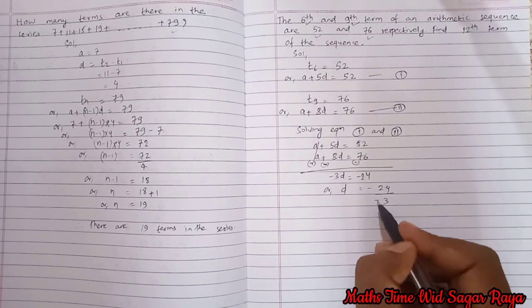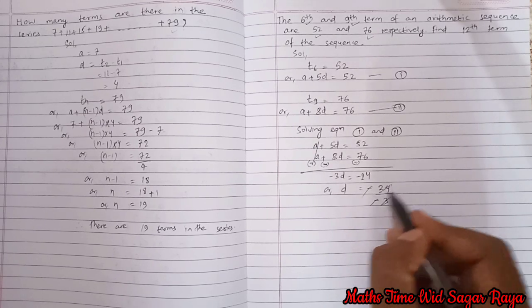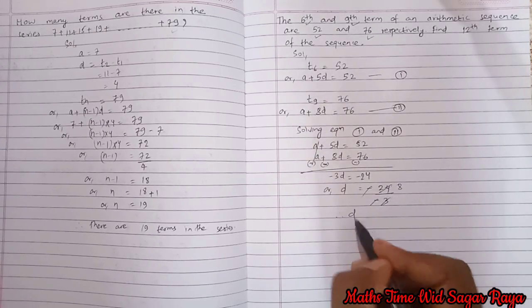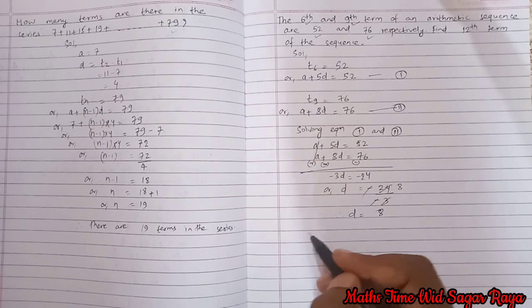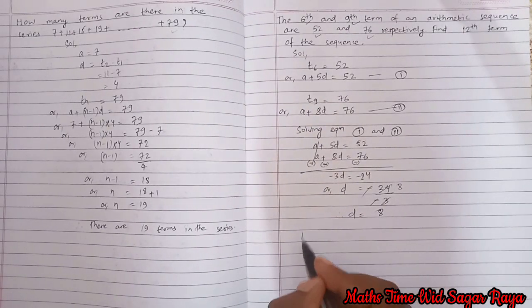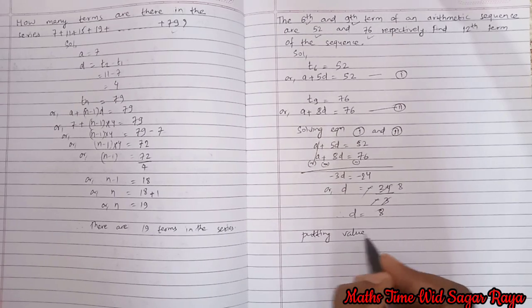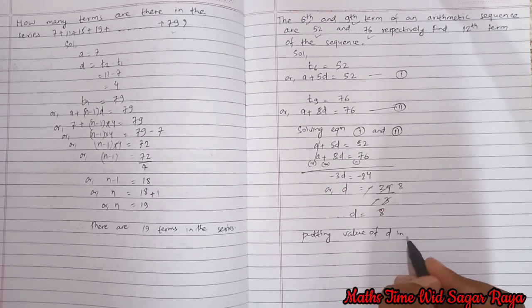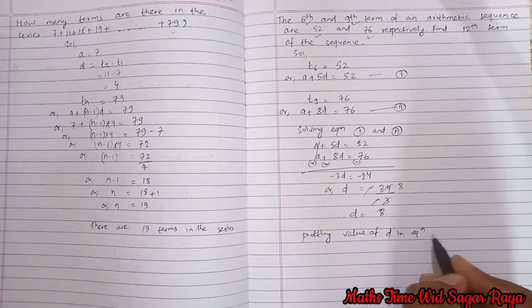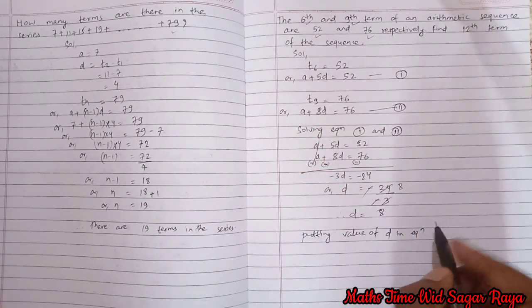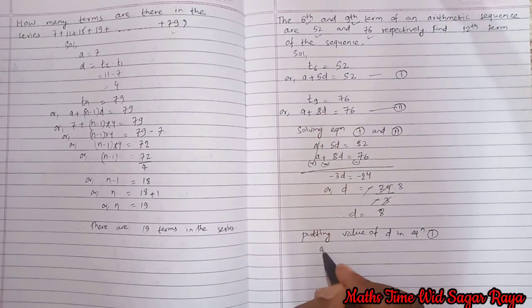So d equals to minus 24 by minus 3. Minus minus cancel, 3 eights at 24, so d is equals to 8. So let's put the value of d in, you can put in either equation, let's put in equation 1.